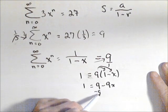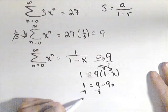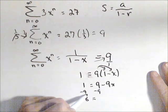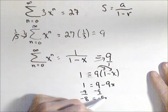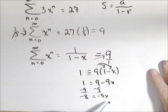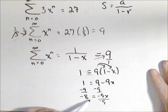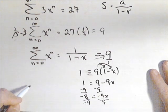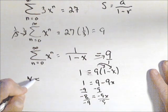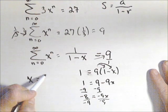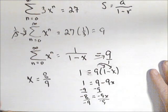Subtract the nine off of each side, so over here I get negative eight equals negative nine x. And last step, divide both sides by negative nine. So I get that x, for this to work out, would have to be negative eight over negative nine, or eight ninths.